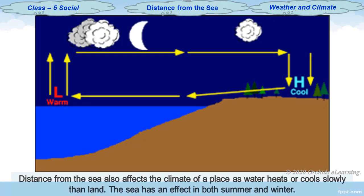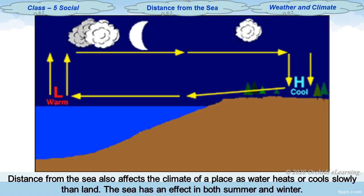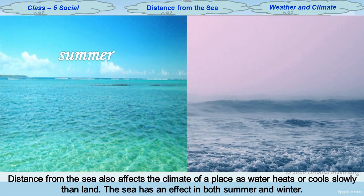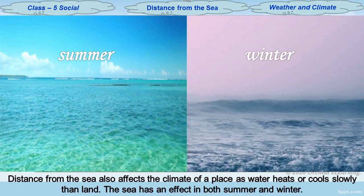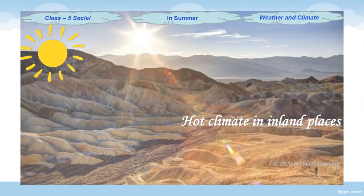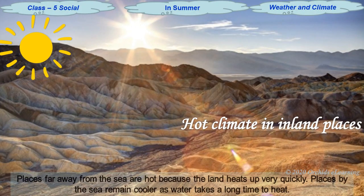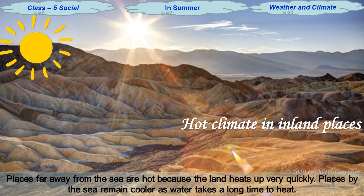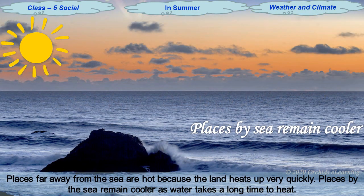Distance from the sea also affects the climate of a place, because water heats or cools more slowly than land. The sea has an effect in both summer and winter. In summer, places far away from the sea, or inland places, are hot because the land heats up very quickly. Places by the sea remain cooler as water takes a long time to heat.